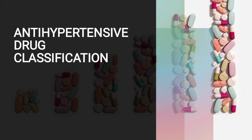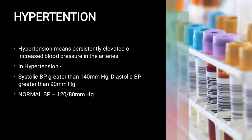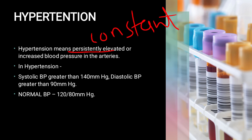Welcome to today's lecture. In this video I will discuss the antihypertensive drug classification. Hypertension means persistently elevated or increased blood pressure in the arteries. In hypertension, systolic blood pressure is greater than 140 mmHg and diastolic blood pressure is greater than 90 mmHg.